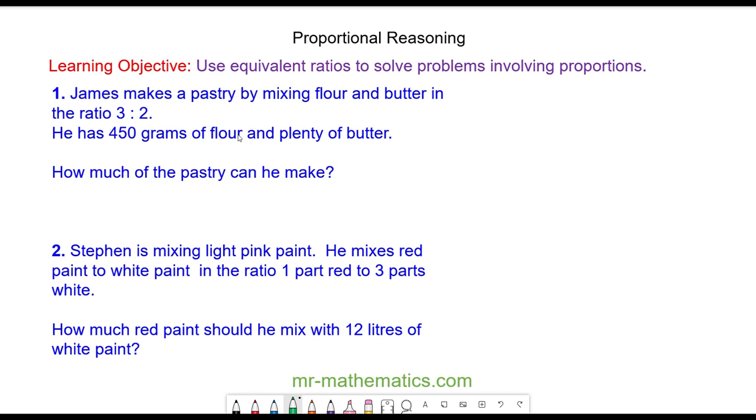We'll begin with question one where James is making a pastry by mixing flour and butter in the ratio of three to two. He has 450 grams of flour and plenty of butter. How much of a pastry can he make?